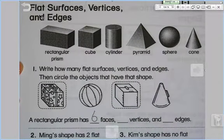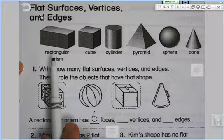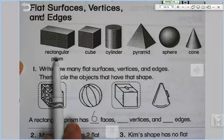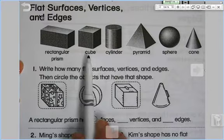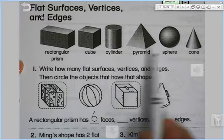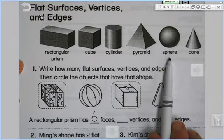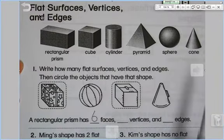Right off the bat, we're looking, number one, let's take a look here. We have a rectangular prism, a cube which we just learned about last week, a cylinder, a pyramid, a sphere, and a cone.